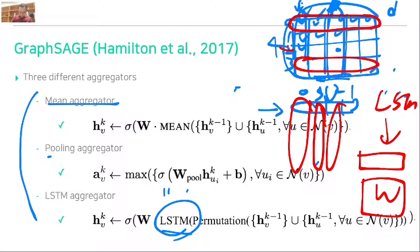At another epoch, we get a different index order — for example, 2, 3, 1, 0. By fetching the row vectors from the previous layer in this new order, we get corresponding row vectors, make another sequence, and train the LSTM. That is called the LSTM aggregator.